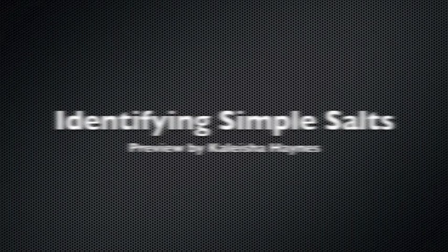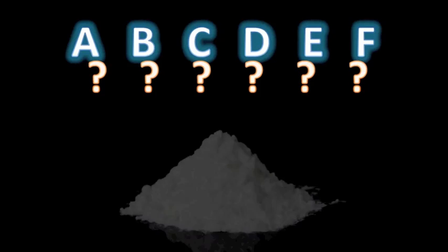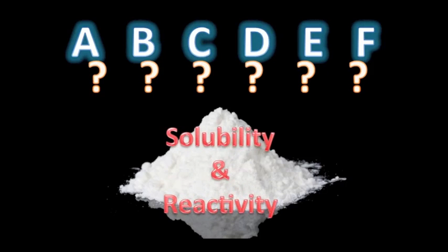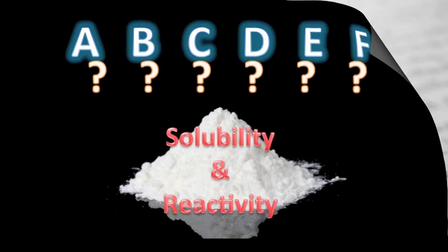The goal of this experiment is to determine what each white solid is by using their physical and chemical properties. In other words, we will use physical properties such as solubility in water, and chemical properties such as reactivity, to figure out the identity of each salt labeled A through F.